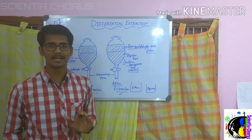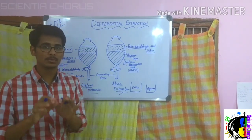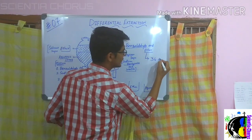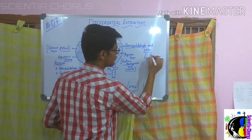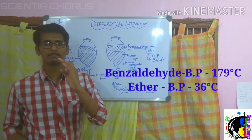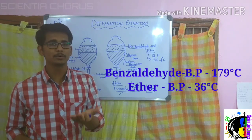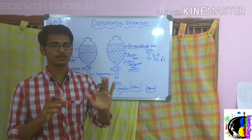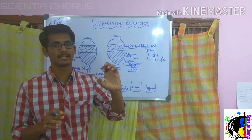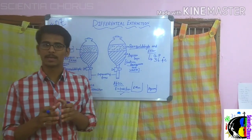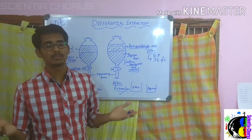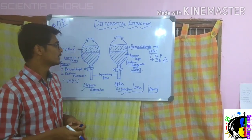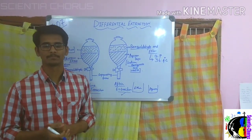Now I want only benzaldehyde. Since ether has a boiling point of around 36.4 degrees Celsius, by performing a distillation process I can separate the ether from benzaldehyde, and I successfully obtain only benzaldehyde as the final product. This is how we separate liquids according to their solubilities. Clear? This is all about differential extraction. Thank you.